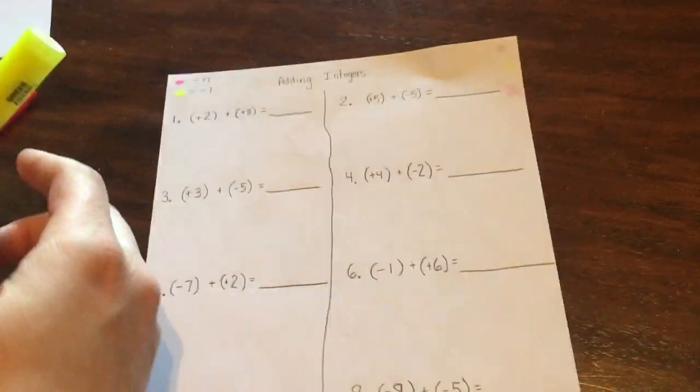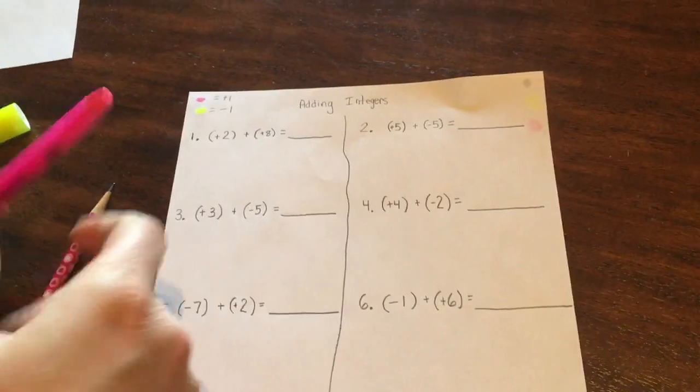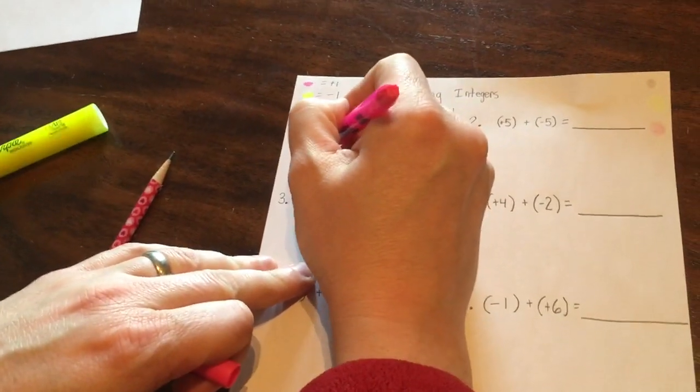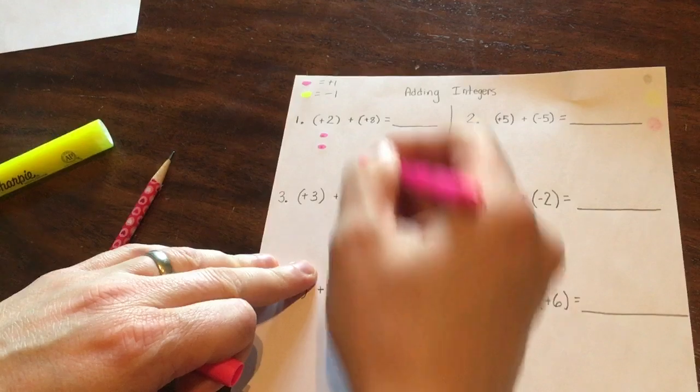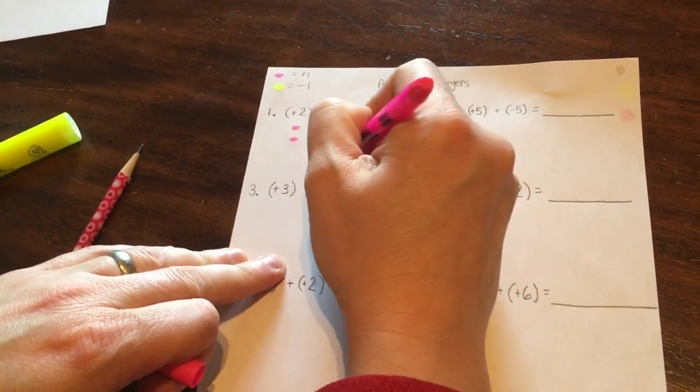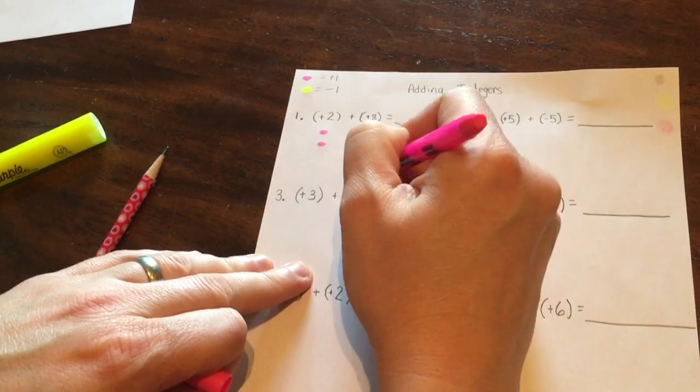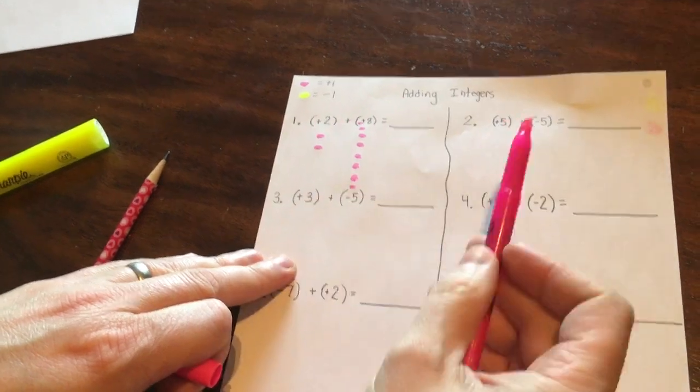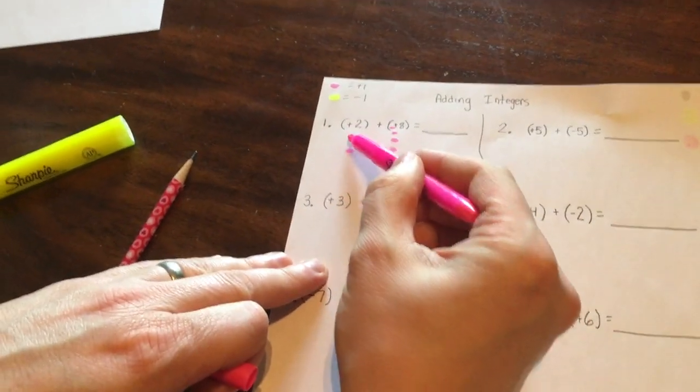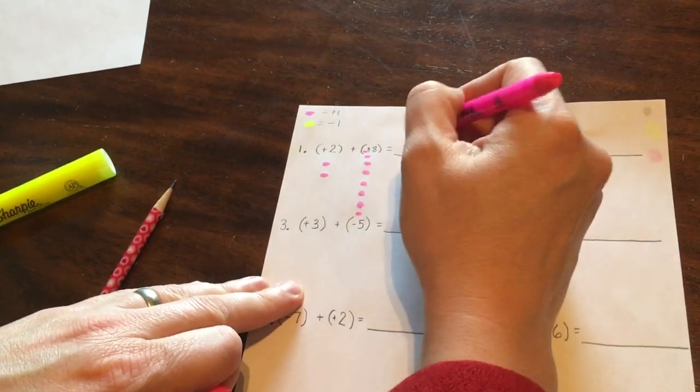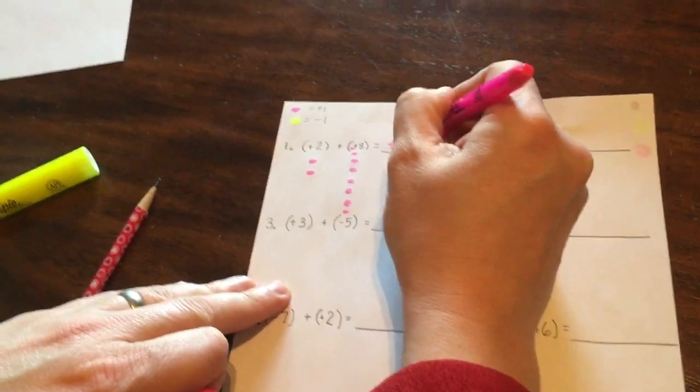With positives you just use the quantity, so this is how we add. You have two of them, and then we put eight. Now I have, I add. So I'm not taking anything away, so I just count them. One, two, three, four, five, six, seven, eight, nine, ten. So there we go, positive ten.